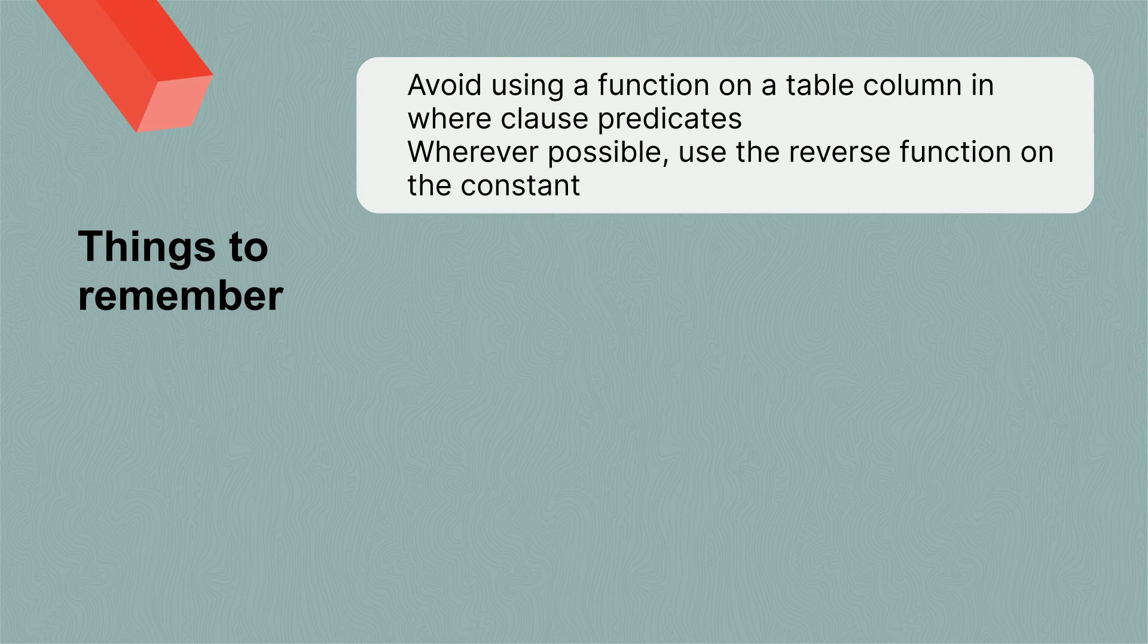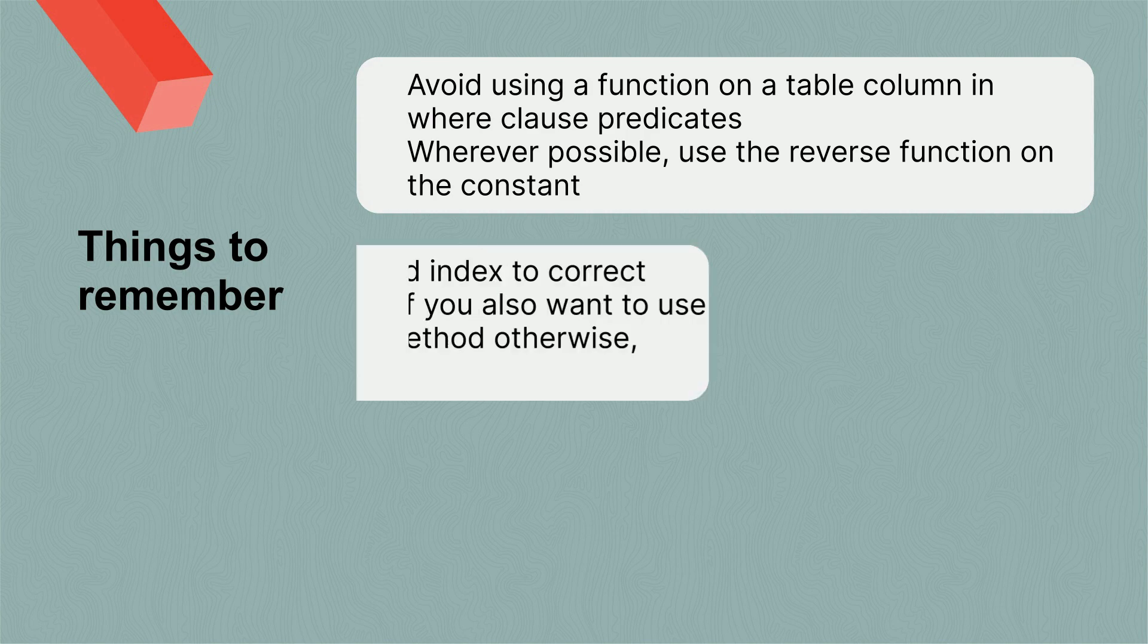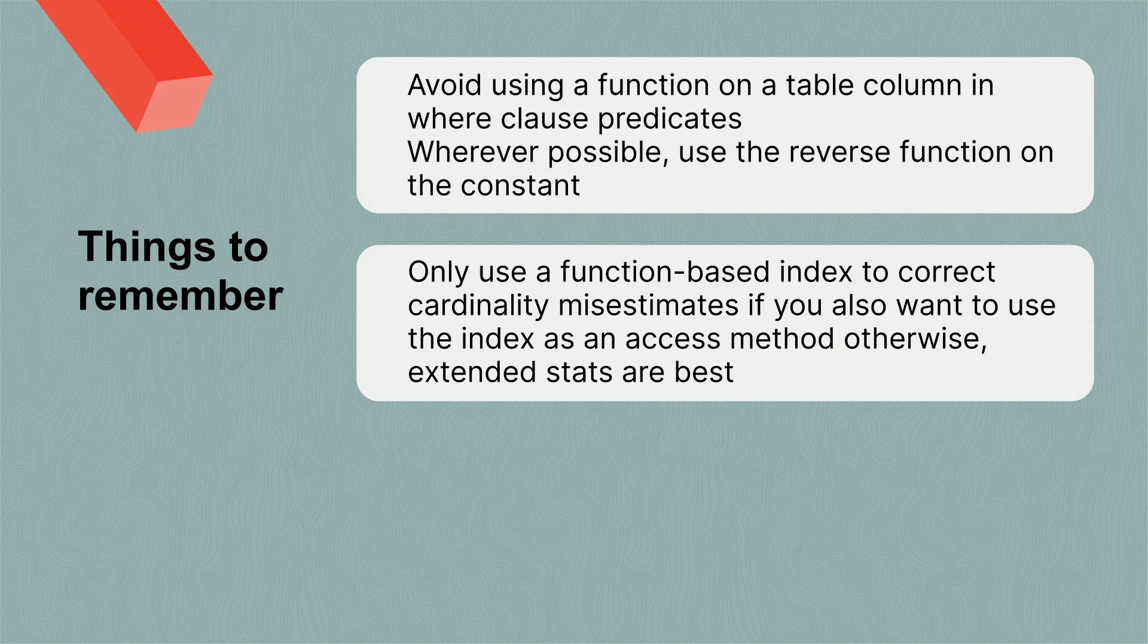So just a couple of things to remember. Try and avoid putting a function on a table column in a where clause predicate. Wherever possible, use the reverse function on the constant instead. If you can't avoid it, then only use the function-based index to create the cardinality estimate if you also want to use that index as an access method. Otherwise, you're much better off using extended stats.